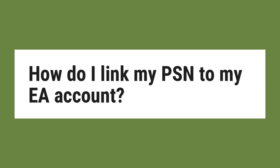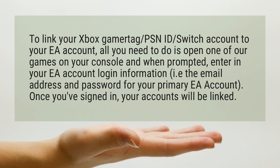How do I link my PSN to my EA account? To link your Xbox Gamertag or PSN ID to your EA account, all you need to do is open one of our games on your console and when prompted, enter in your EA account login information, i.e. the email address and password for your primary EA account. Once you've signed in, your accounts will be linked.